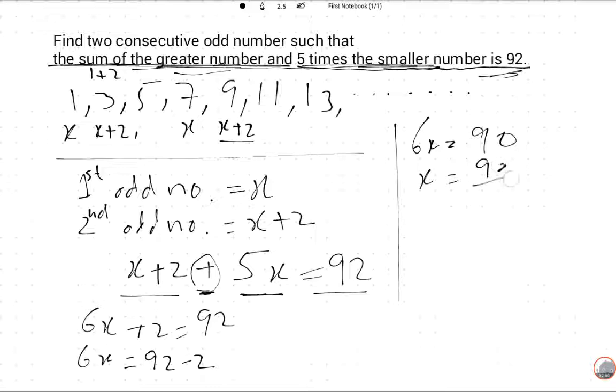X will be 90 divided by 6. Six ones are six, and three and zero, six times fifteen is ninety. So X is equal to 15. The smaller number is 15.